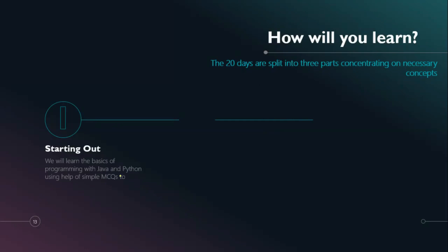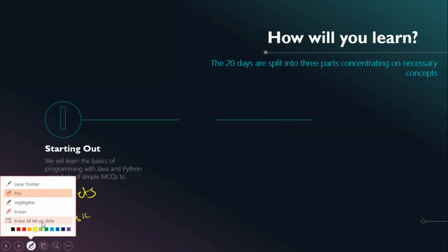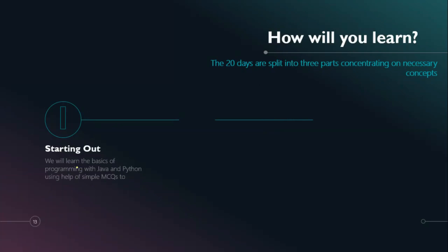The first part I call 'Starting Out.' We will learn the basics of programming with Java and Python using simple MCQs, dedicating alternating days to each language. We may also look at small code snippets and solve some basic Java and Python problems.